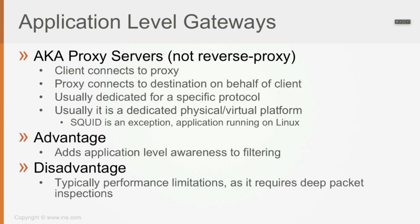The advantage is that it has application-level awareness for filtering, and it's able to do very deep packet inspection with a lot of policies available for protocol support. The disadvantage is that typically we have performance limitations, because it requires deep packet inspection for all packets going back and forth, which requires a lot of processing power and memory. So usually application level gateways don't have very high performance.